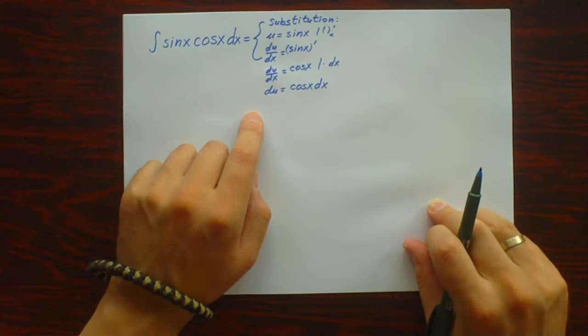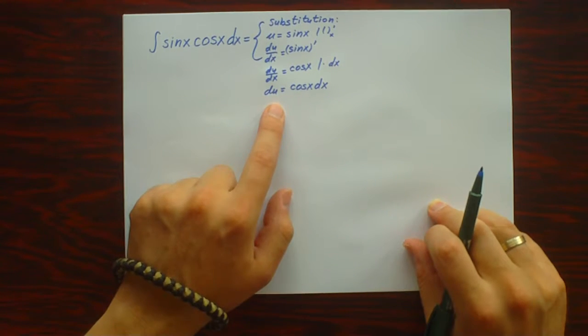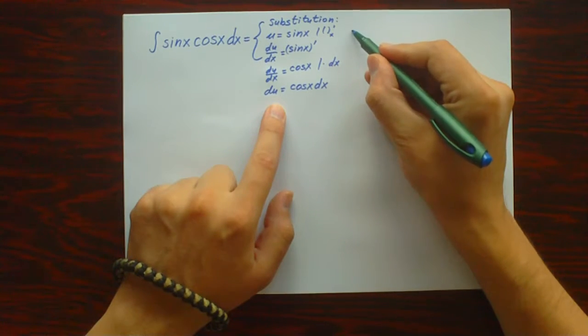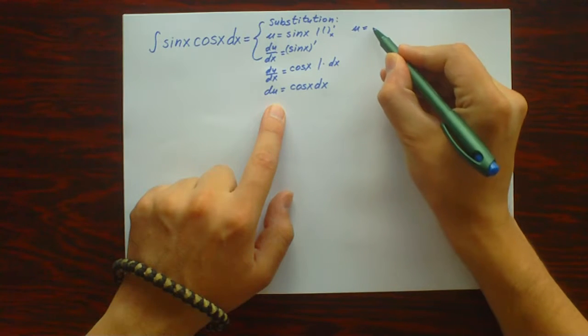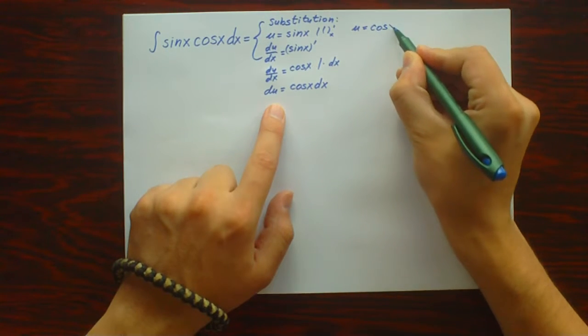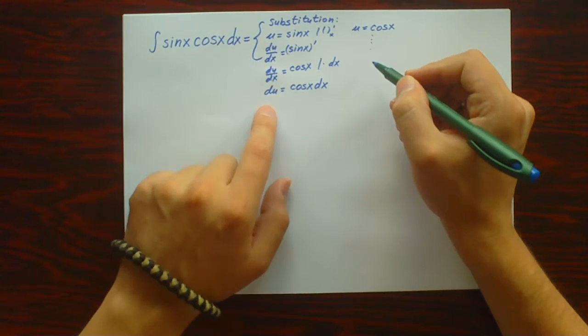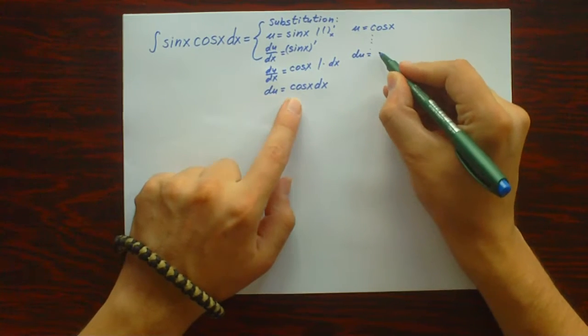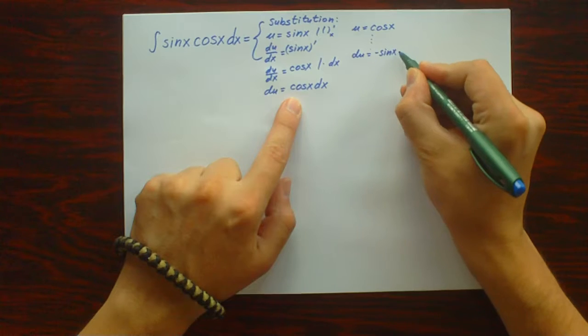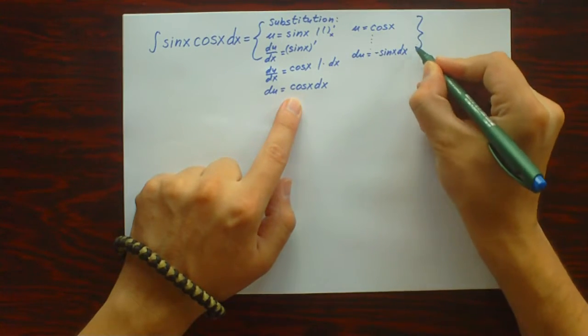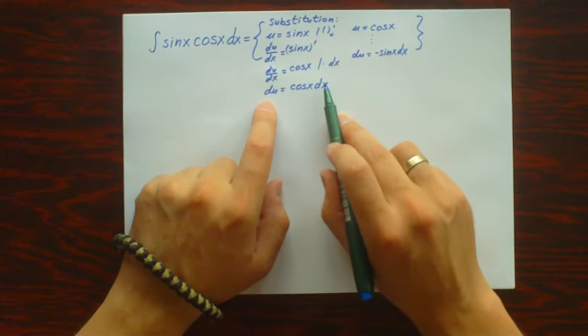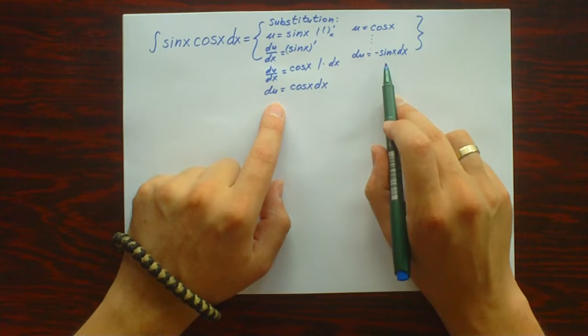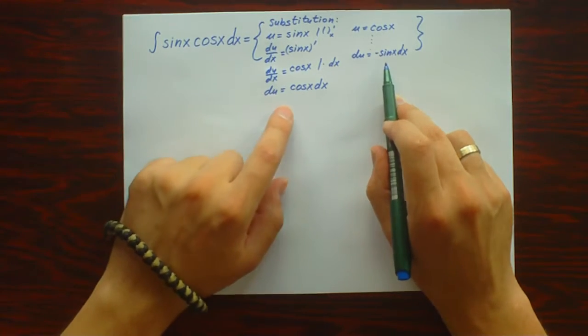That is the first example of using substitution. We could also use another substitution, for example, y equals cos x. And if we work the same way as we did here, we would get dy equals minus sin x dx. But we're going to work with the first substitution, and for practice you can try to solve this integral using the alternative substitution.